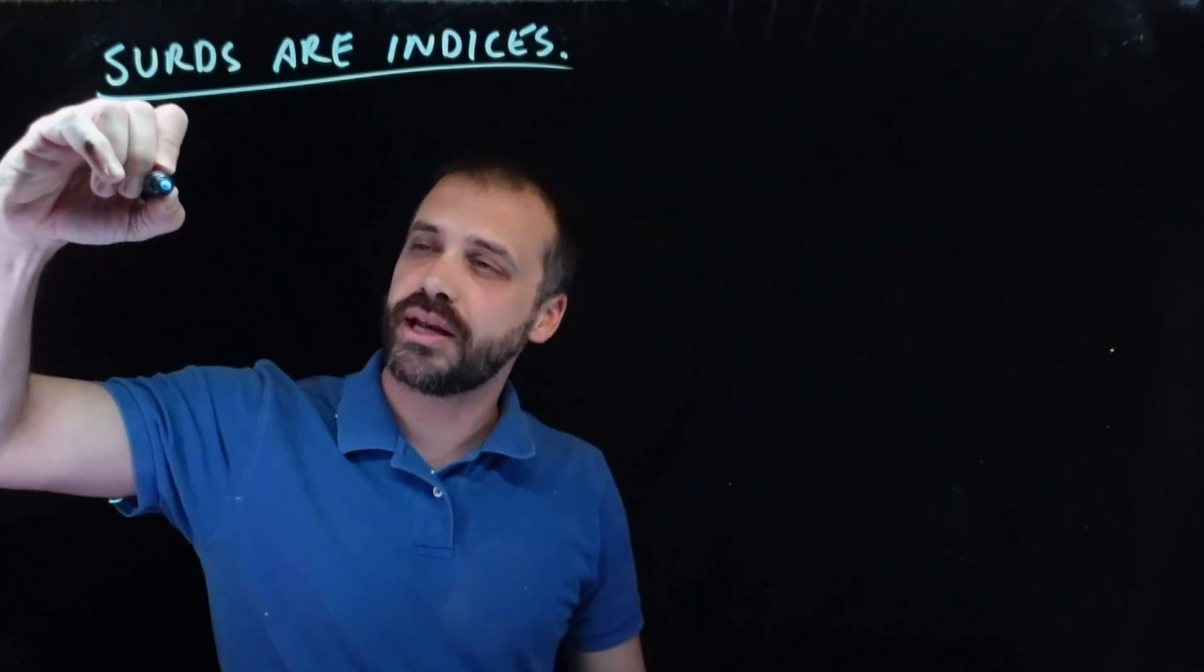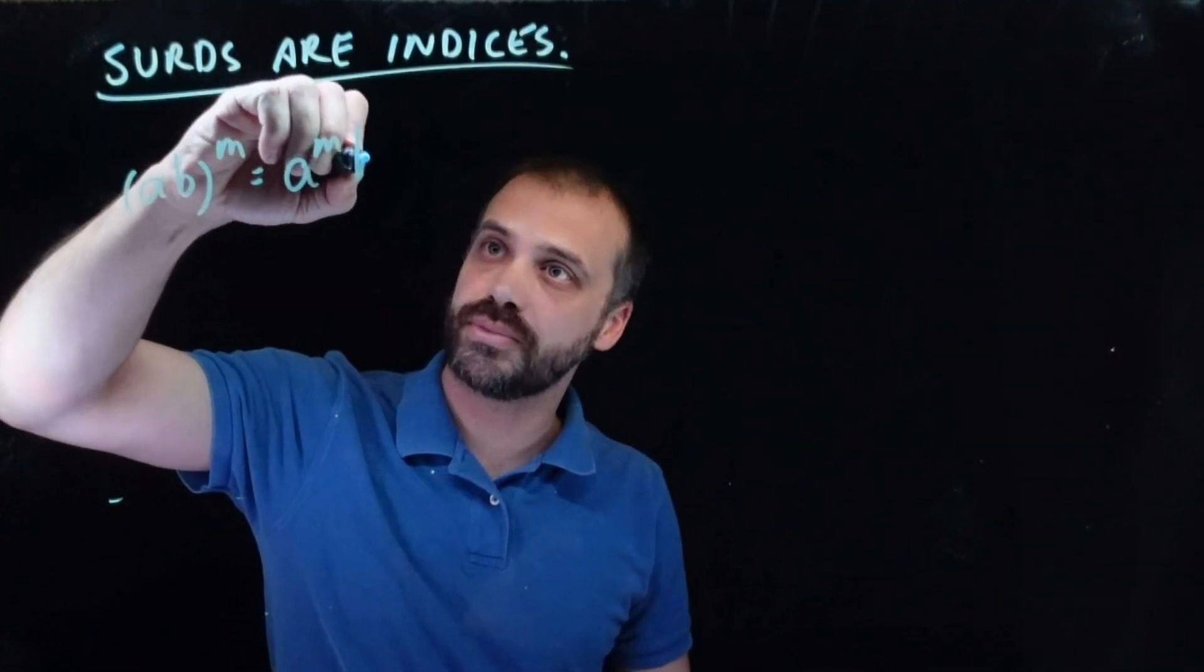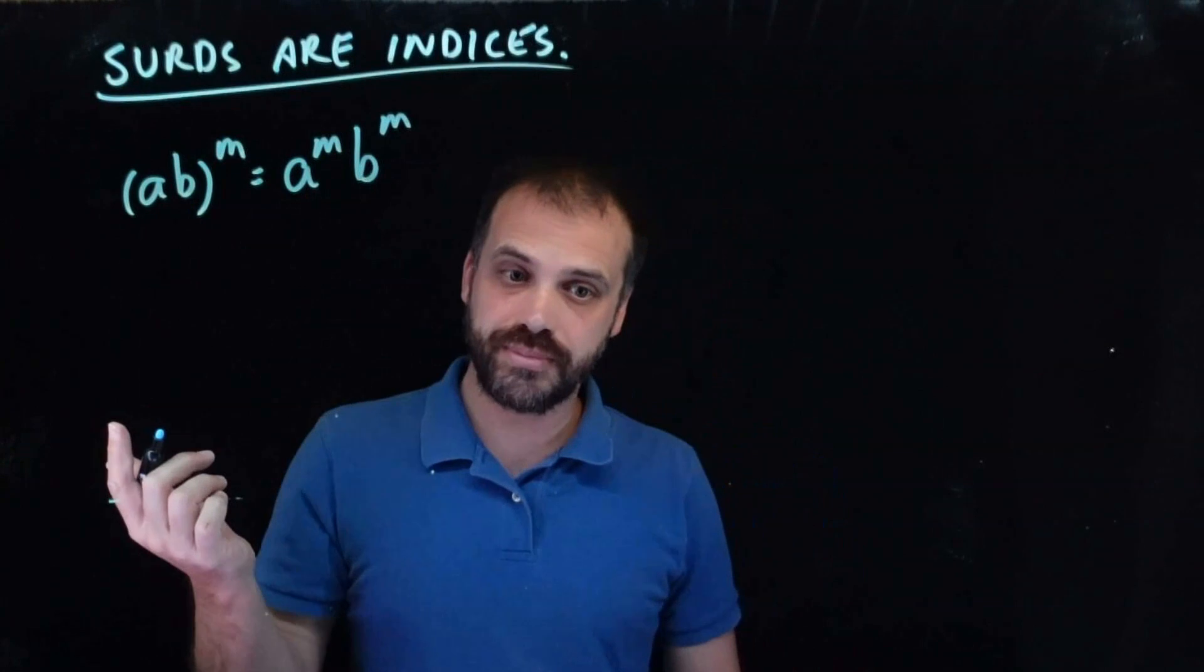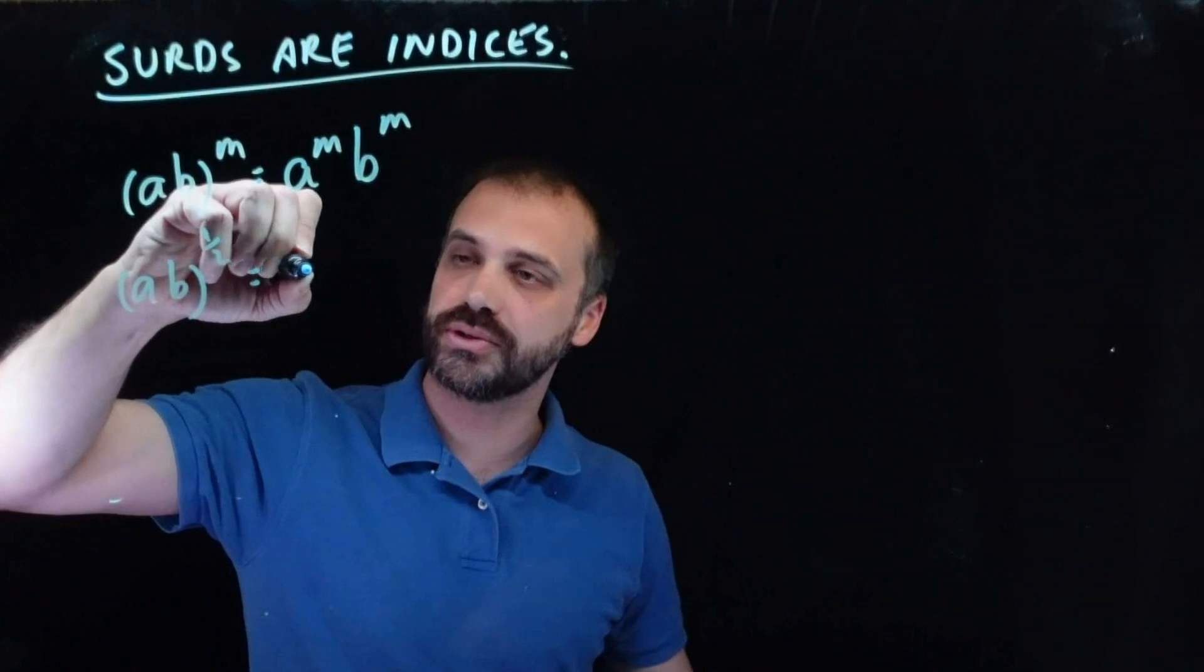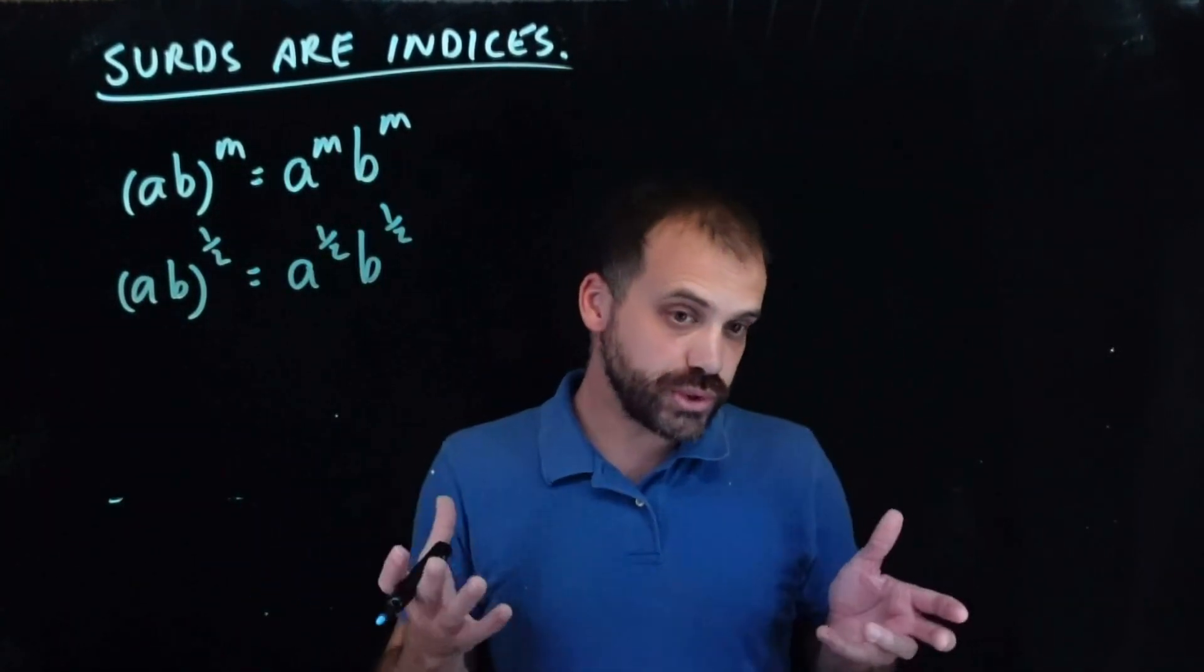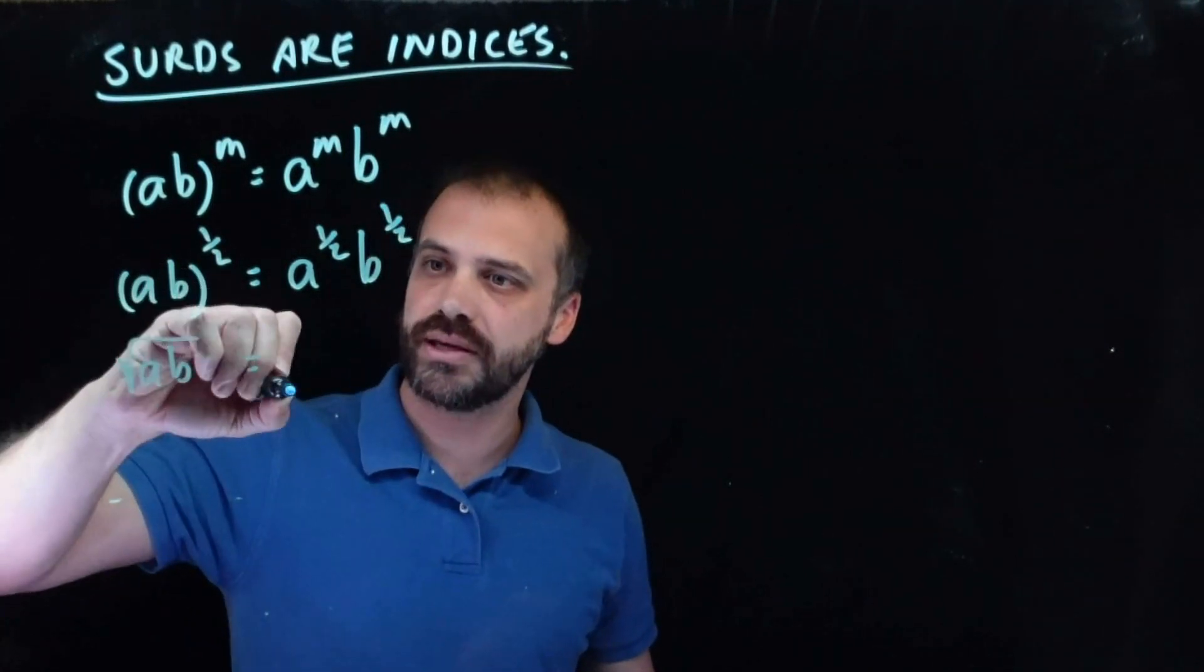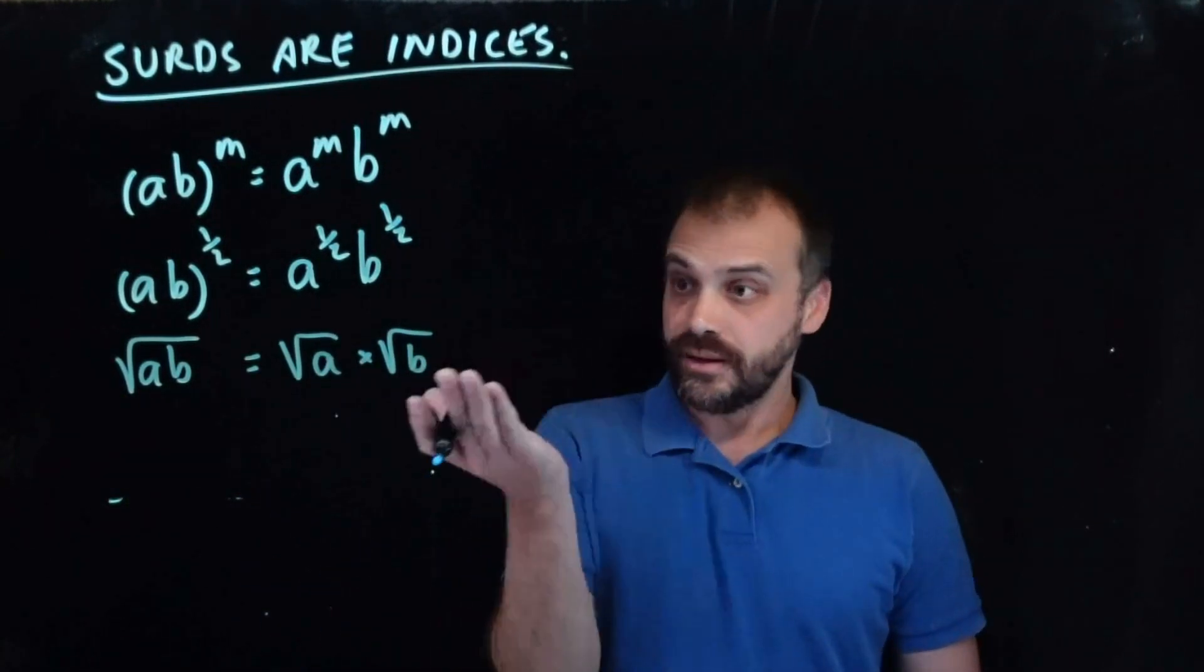We know an index law: (ab)^m equals a^m times b^m. That's one of our index laws. To make it specific to surds, instead of m's, we've got halves. (ab)^(1/2) equals a^(1/2) times b^(1/2). And to make it even more specific to surds, instead of halves, we can write the halves as square roots. So the square root of ab is equal to the square root of a times the square root of b. And that's the rule.